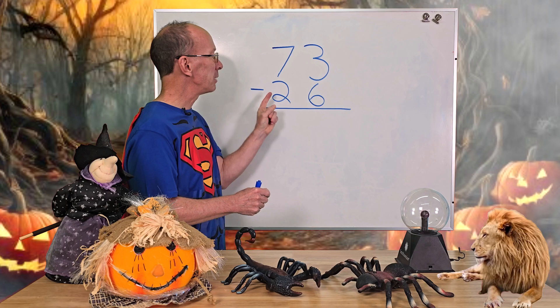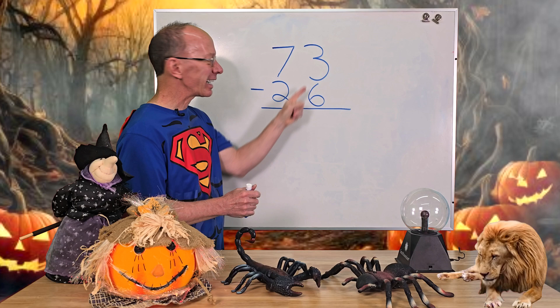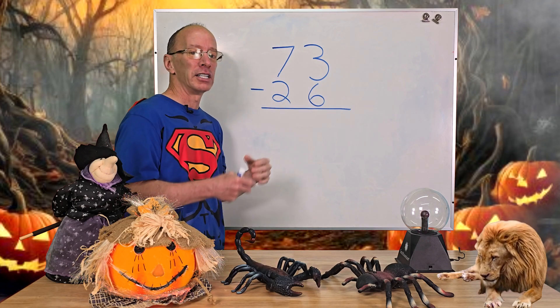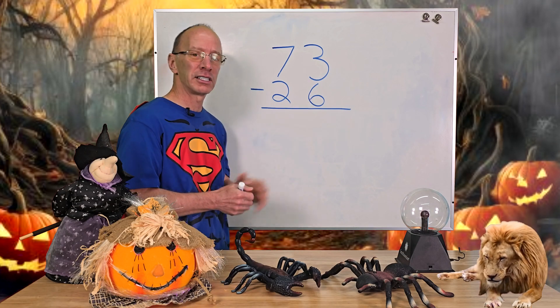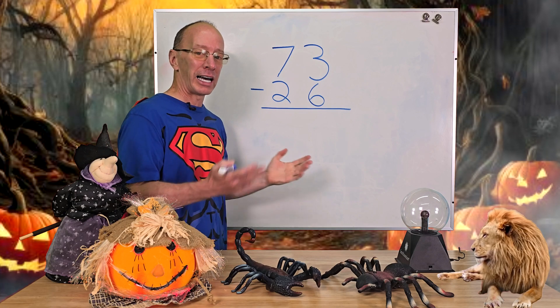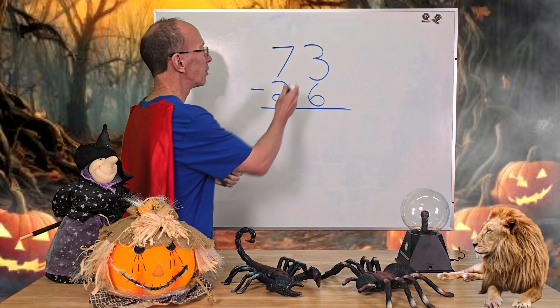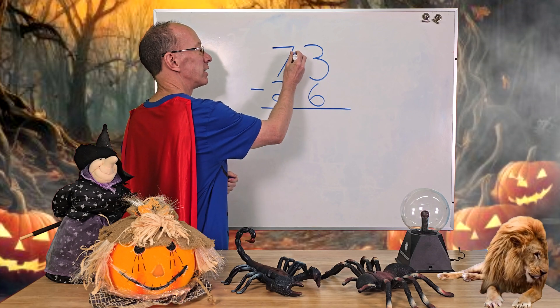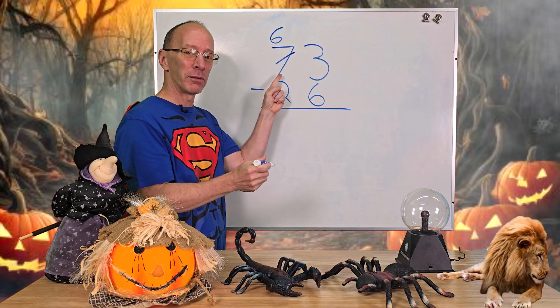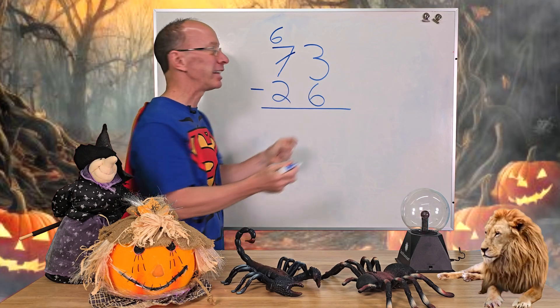We have 73 minus 26. Now, if you notice right here, this is not going to be three minus six. You kind of have to say to yourself, I have three cookies and you want to take six away. It's not going to happen. We need to make that number bigger. How do you make that bigger? We're going to borrow from next door. So I'm going to go ahead and cross off the seven and that's going to make it a six. So I'm taking a 10 away from there actually, and I'm going to put it and add it to the three and that's going to make it a 13.